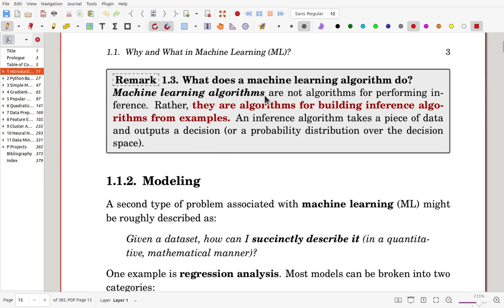Practically, machine learning algorithms are not algorithms for performing inference. They are algorithms for building inference algorithms from examples. So, these inference algorithms are a sort of a function for given data set, it can make output. Now,